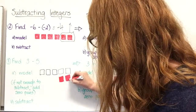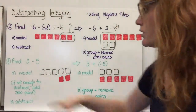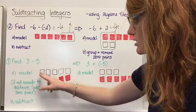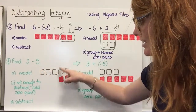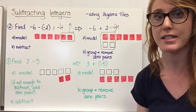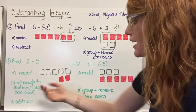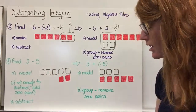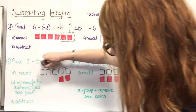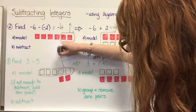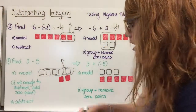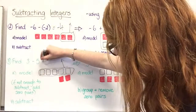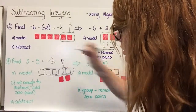Now we have three subtract five. The value is still three because we just added two zero pairs that didn't change the value. Now we have enough to subtract five — one, two, three, four, five — so we subtract those and are left with negative two. Three subtract five equals negative two.